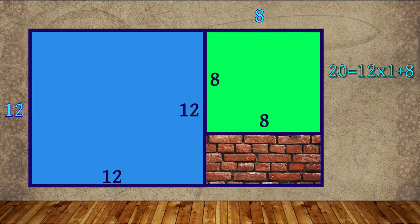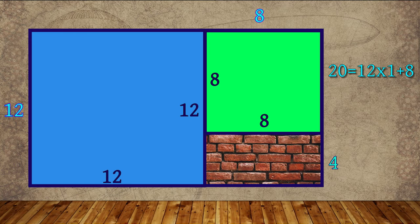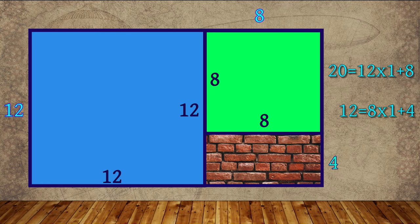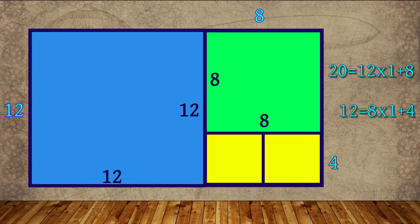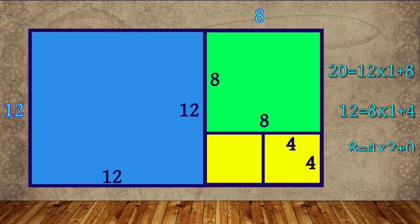And 4 by 8 meter square space will be left out. Mathematically, 12 is equal to 8 into 1 plus 4. Now 4 by 8 meter square space will be covered by 2, 4 by 4 meter square tiles. Mathematically, 8 is equal to 4 into 2 plus 0.